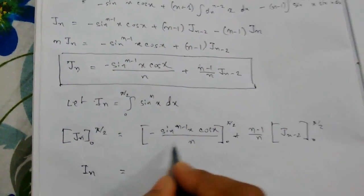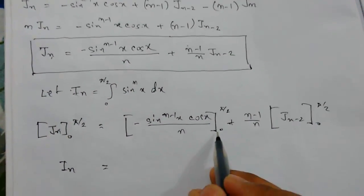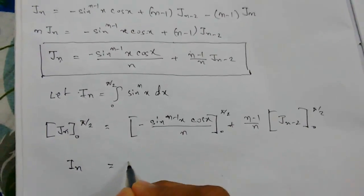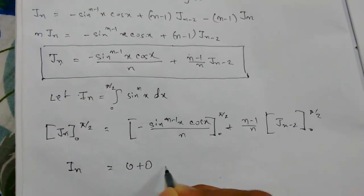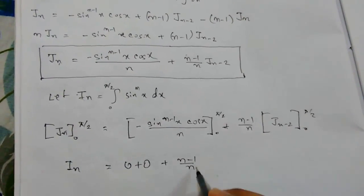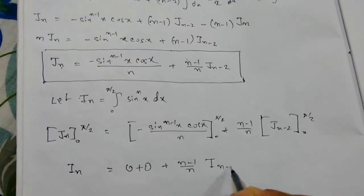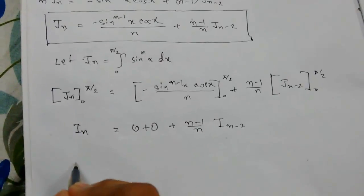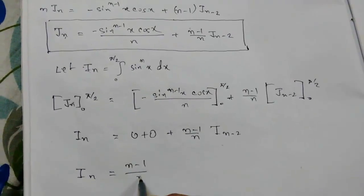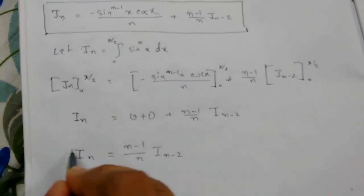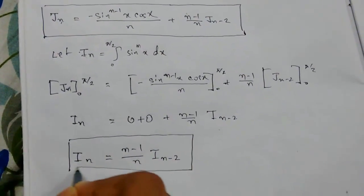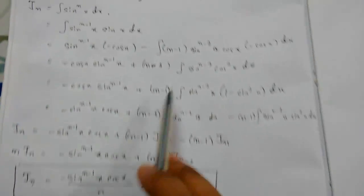Evaluating the limits: sin(0) = 0 and cos(π/2) = 0, so the boundary term vanishes entirely. The remaining term gives I_(n-2). Therefore the definite integral reduction formula is: I_n = ((n-1)/n)·I_(n-2). This is our reduction formula for the definite integral.